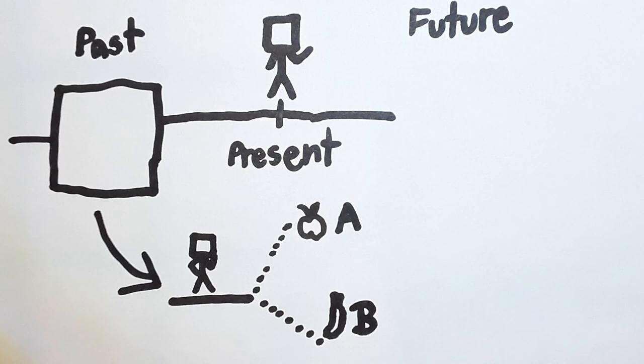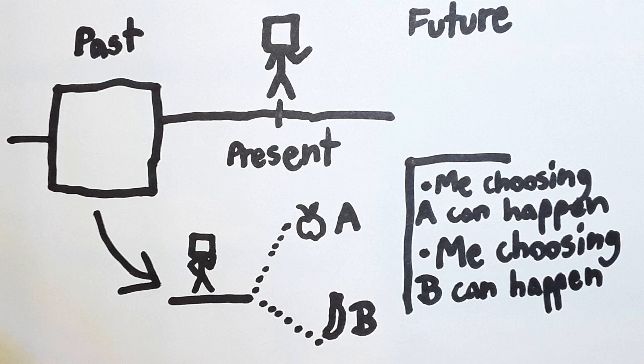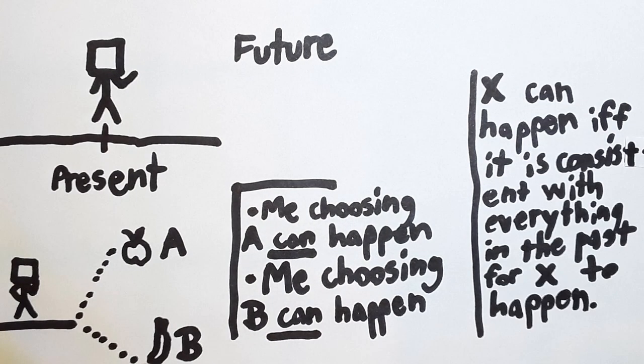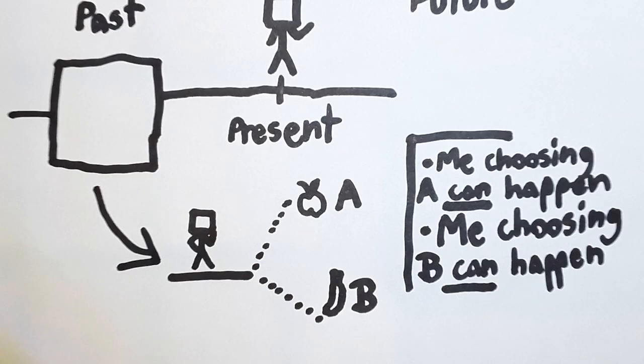Now, assuming I have free will, me choosing A can happen, and me choosing B can also happen. Now, let's be specific about what we mean by can. X can happen if and only if it is consistent with everything in the past for X to actually happen. So, free will entails that many possible future choices are consistent with a given past.